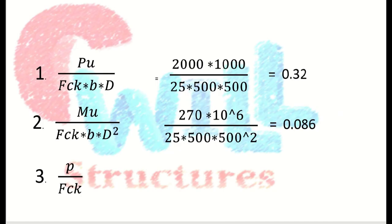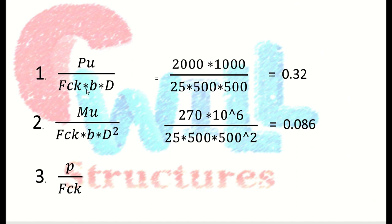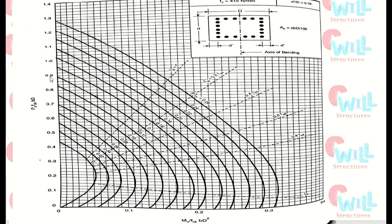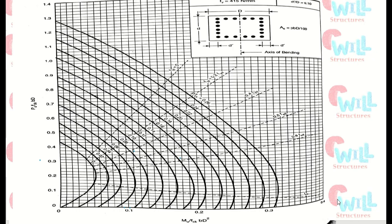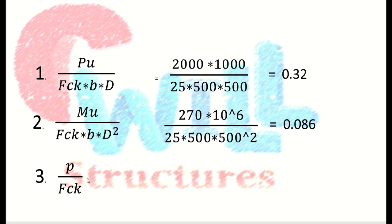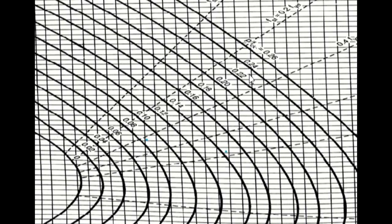On chart 44, Pu/(fck·B·D) = 0.32 is located on the y-axis, and Mu/(fck·B·D²) = 0.086 is on the x-axis. The x-axis has 10 divisions from 0 to 0.1, so each division is 0.01. The y-axis has 5 divisions per 0.1, so each square is 0.02. The curves are labeled with P/fck values: 0.26, 0.24, 0.22, 0.20, 0.18, 0.16, 0.14, 0.12, 0.10, 0.08, 0.06, 0.04, 0.02, and 0.